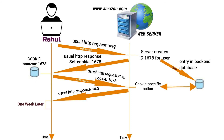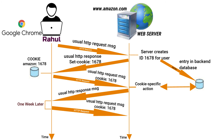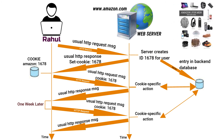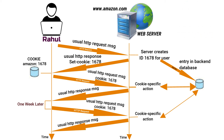One week later, if Rahul returns to the Amazon website, his browser will continue to put the header line Cookie: 1678 in the request message. Amazon also recommends products to Rahul based on the web pages he has visited at Amazon in the past.